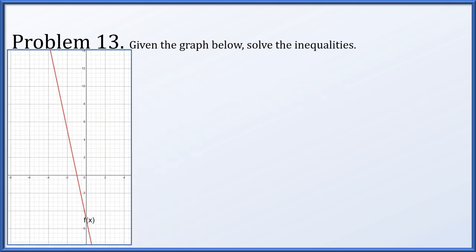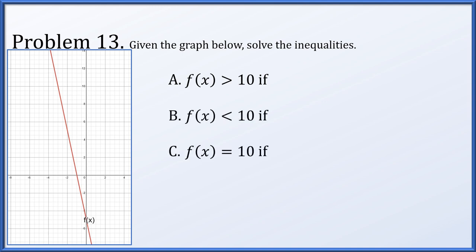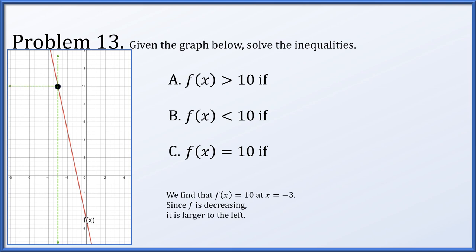In problem thirteen, given a graph of f of x, solve various inequalities involving the value 10. We find f of x equals 10 when x equals negative 3. Since the graph is decreasing, f of x is bigger than 10 when x is less than negative 3, f of x is less than 10 when x is greater than negative 3, and f of x equals 10 only when x equals negative 3.